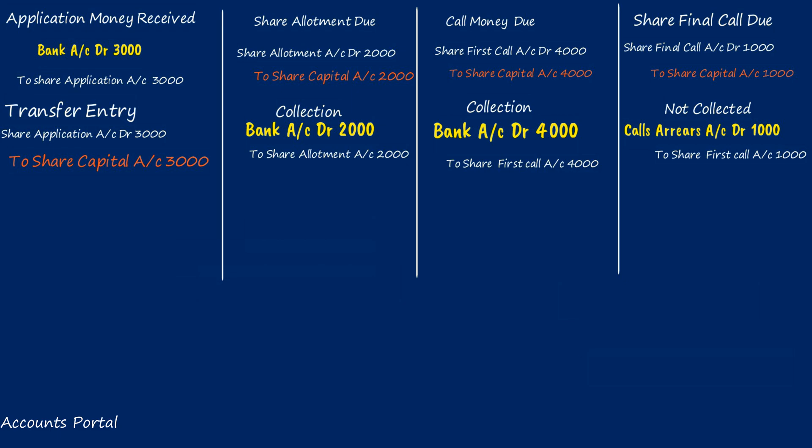Now directors have taken a decision to forfeit Brahmi's shares after the final call. For that forfeiture, what will be the journal entry? Recall all prior entries: application money received and transferred to share capital, allotment money due and received, first call money due and received, final call money due, and calls in arrears entry.